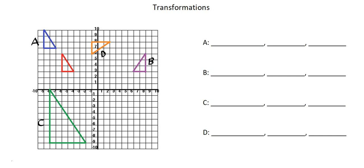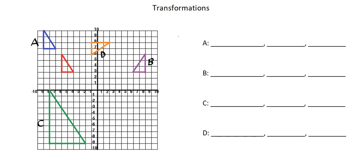Let's begin with A and think about what we can eliminate. A relative to the red triangle hasn't changed size, so it's not an enlargement. It's not rotating in any way, so it's not a rotation. And it's not a mirror image — everything is in the same orientation, so it's not a reflection. All that leaves us with is a translation, so we'll identify A as translation.